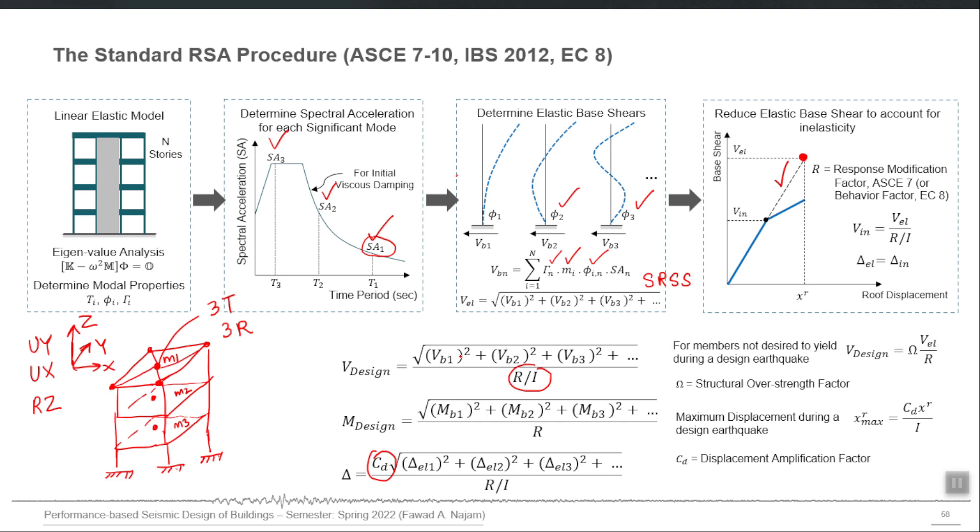These are the three degrees of freedom in which we want to perform the dynamic analysis or in which we want to calculate the displacements: how much that diaphragm sways in x direction, how much sways in y direction, how much it rotates about the vertical axis.